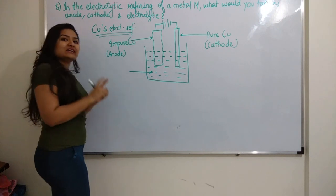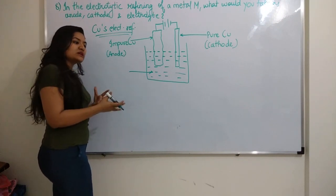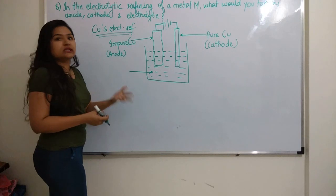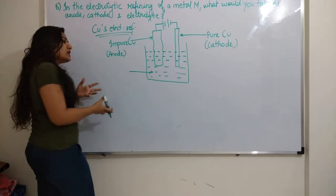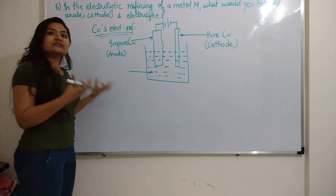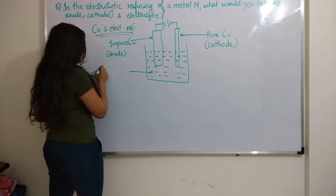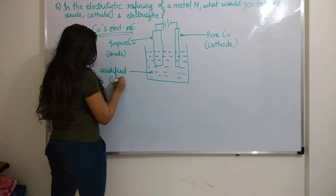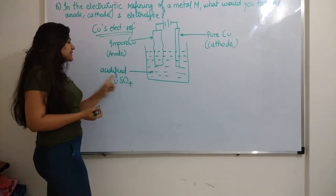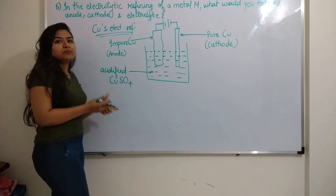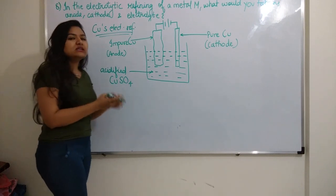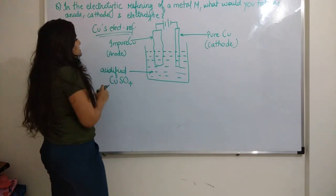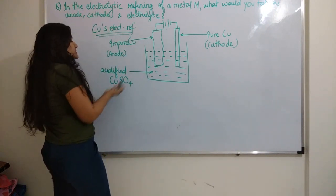As I told you, in refining we take the same metal salt. So here we are taking copper sulfate, and that too we are going to take acidified copper sulfate. Why acidified copper sulfate? Because it ionizes more. You may get a question as, why do we take acidified copper sulfate? Because it ionizes more. Here we will write acidified CuSO4.